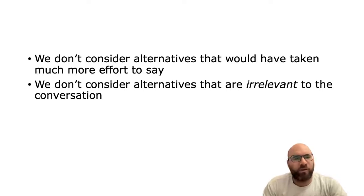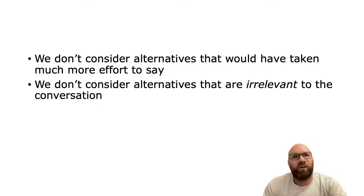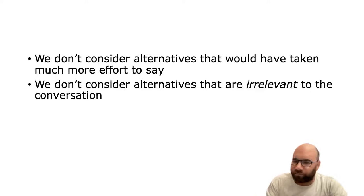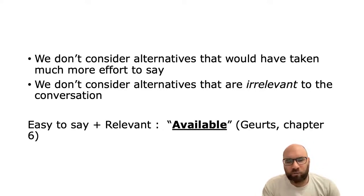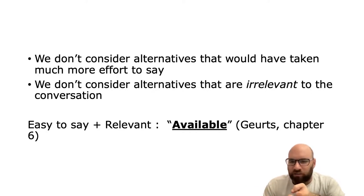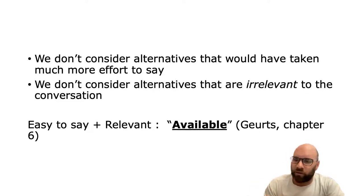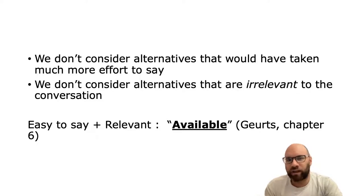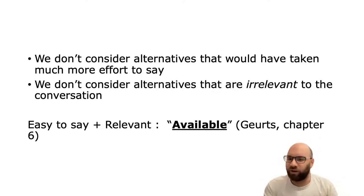The other factor that might matter is that we don't consider alternatives that are totally irrelevant to the conversation. So if I say 'that's a cat,' maybe there's no need for people to wonder why I didn't say all those other things, because those things are just not relevant. Bart Geurts, in one of the readings from the bibliography in this class, talks about this in terms of availability. He says if something is relatively easy to say and it's relevant to the conversation, then it's available when we think about implicatures — when we think about what other things the person could have said but chose not to say, we only consider the ones that are relevant and not very long and wordy.